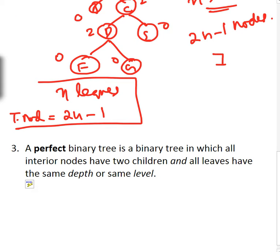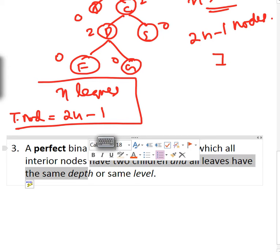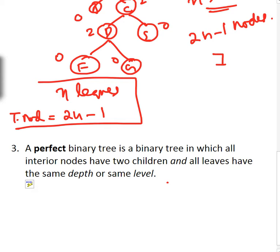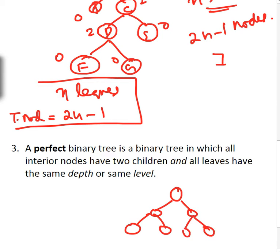Now, a perfect binary tree is one in which all interior nodes have two children and all leaves have the same depth or same level. For example, a tree where the internal nodes each have two children and all leaves are on the same level is both full and perfect. Some authors refer to this as a complete binary tree.